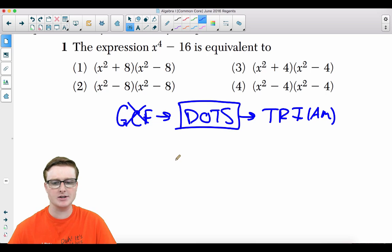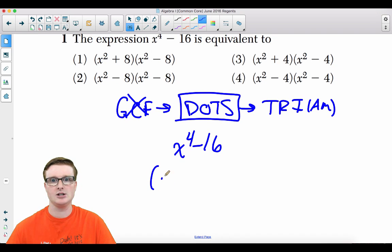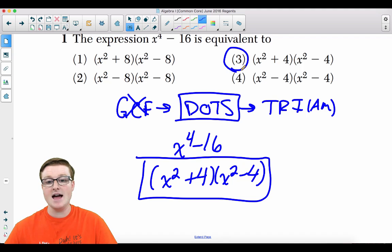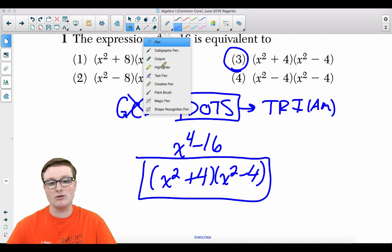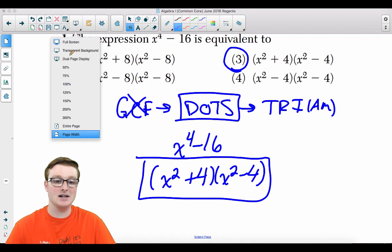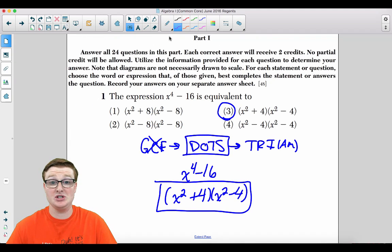It's the difference of two perfect squares. So x to the fourth minus 16 could be reduced to x squared plus 4, x squared minus 4. And that, ladies and gentlemen, is your answer. Personally, I wouldn't have stopped there. I would have kept going because this right here is also factored by dots, but the Regents exam just decided to stop there. So your answer is choice three.